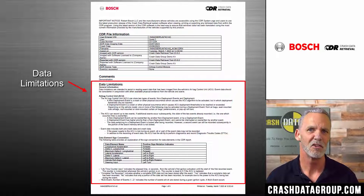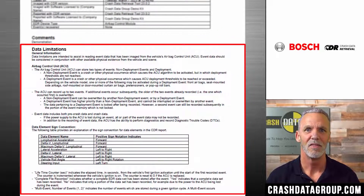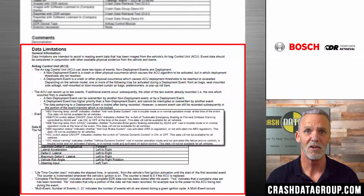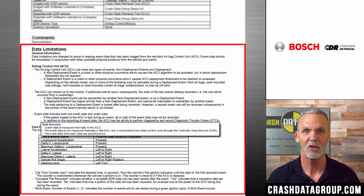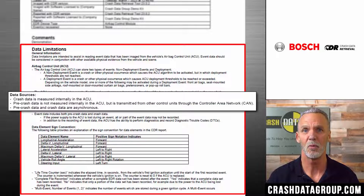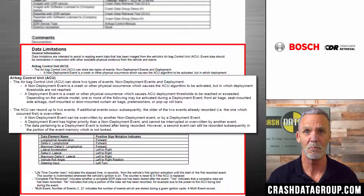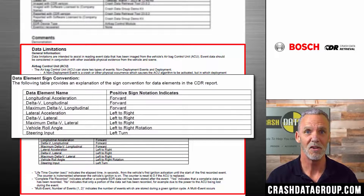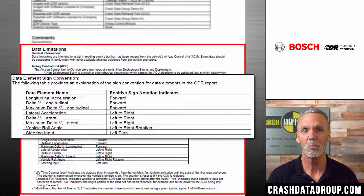The next section is the data limitations section. This section is extremely important and may be up to several pages in length. The information in this section is authored by the auto manufacturers. Data limitations contain important information specific to the ECU the data was retrieved from, including definitions specific to the reported data, explanations of other vehicle systems used to produce reported data, information about the number and types of events the system is capable of recording, and more. Sign conventions are also typically contained in the data limitations section, indicating what a reported positive or negative value means for a particular data element.